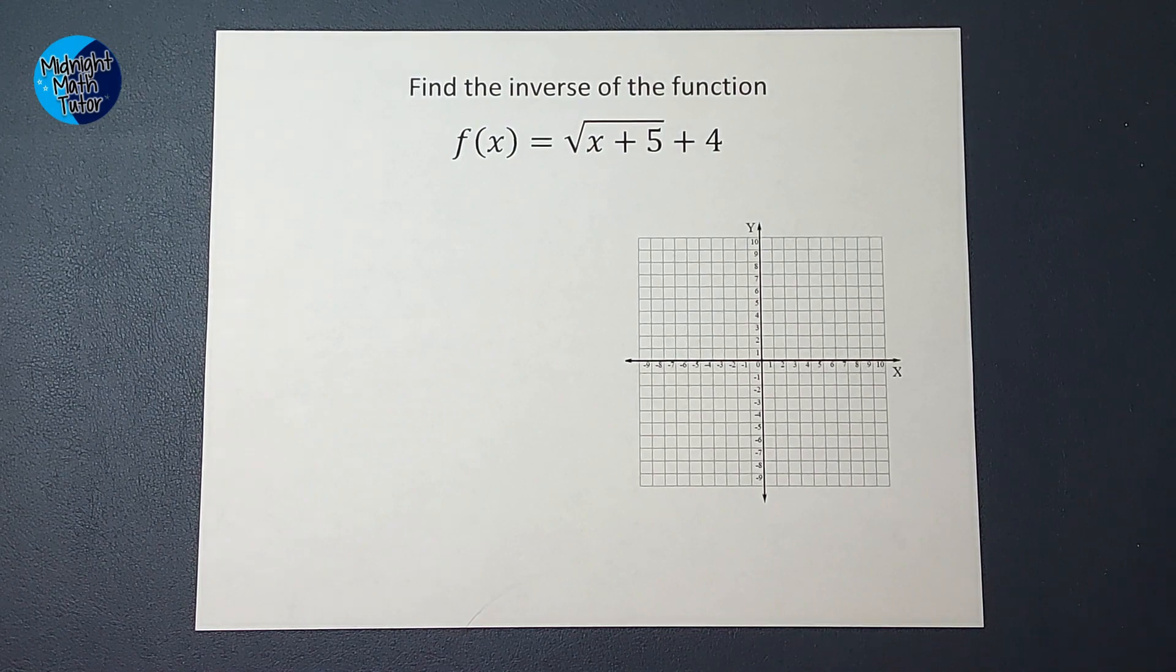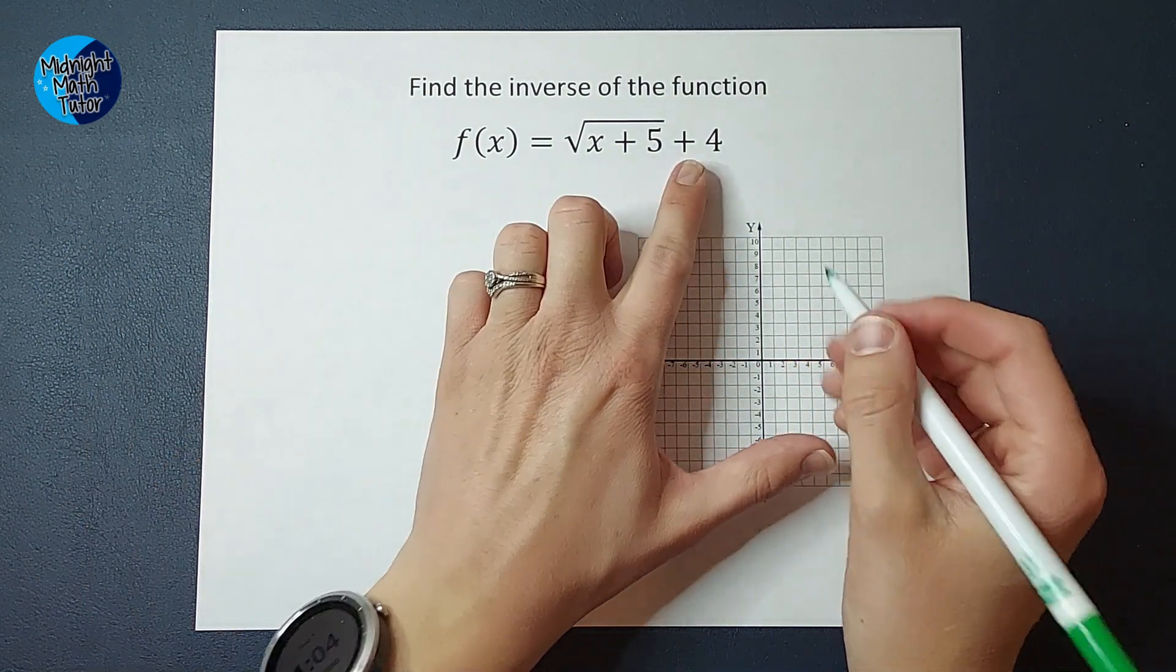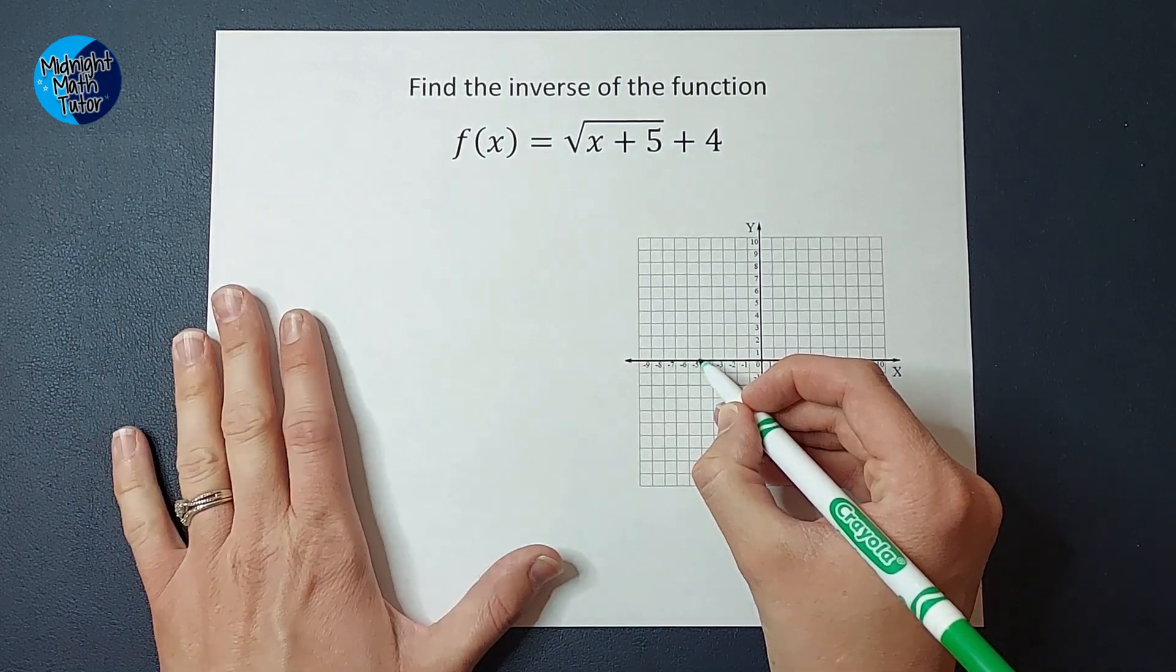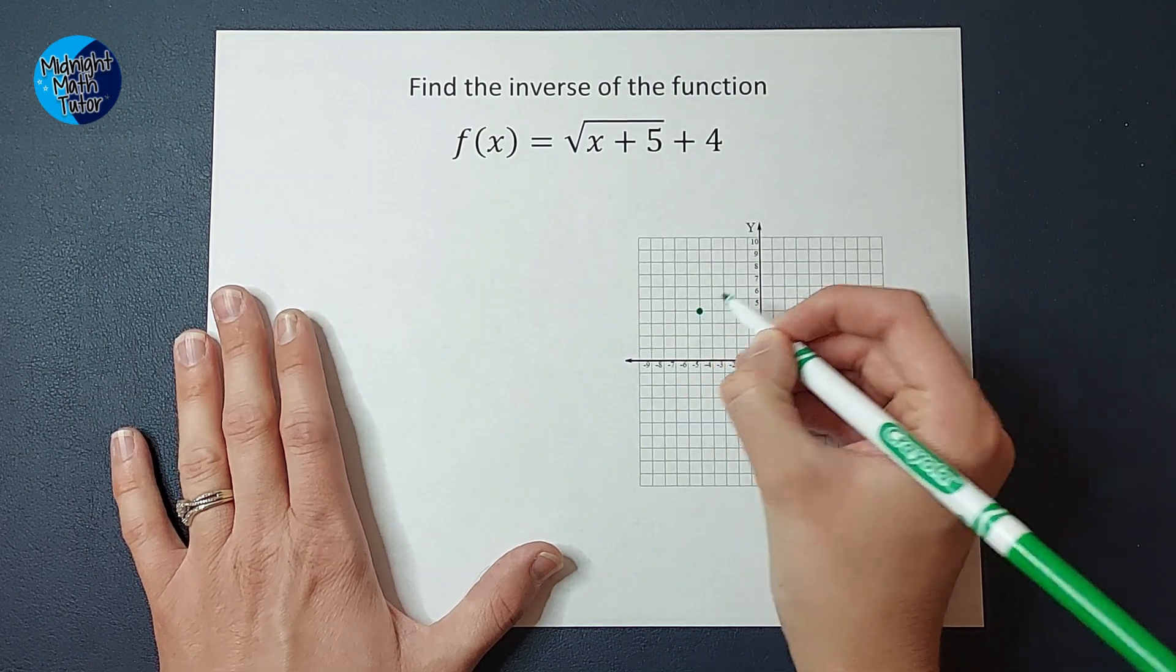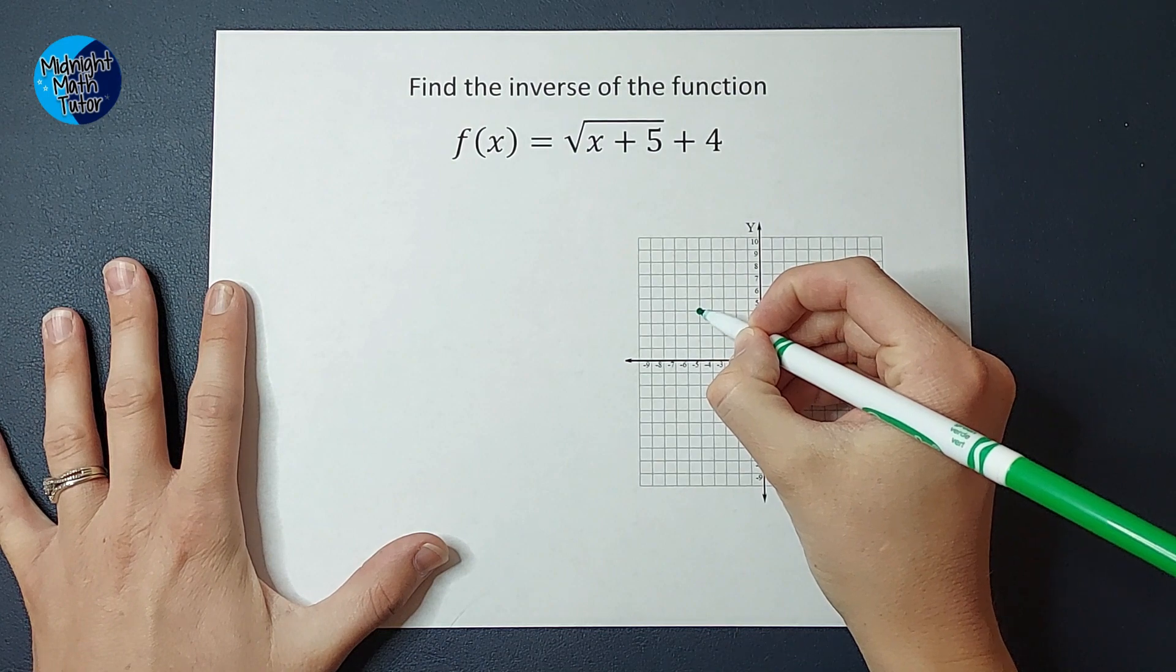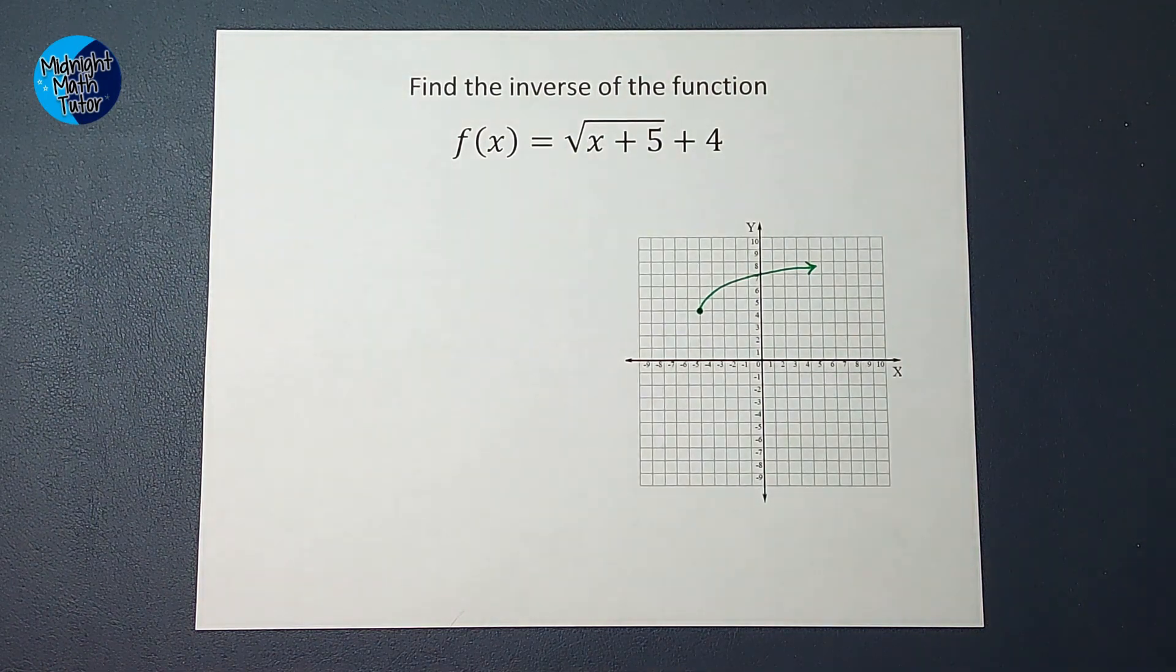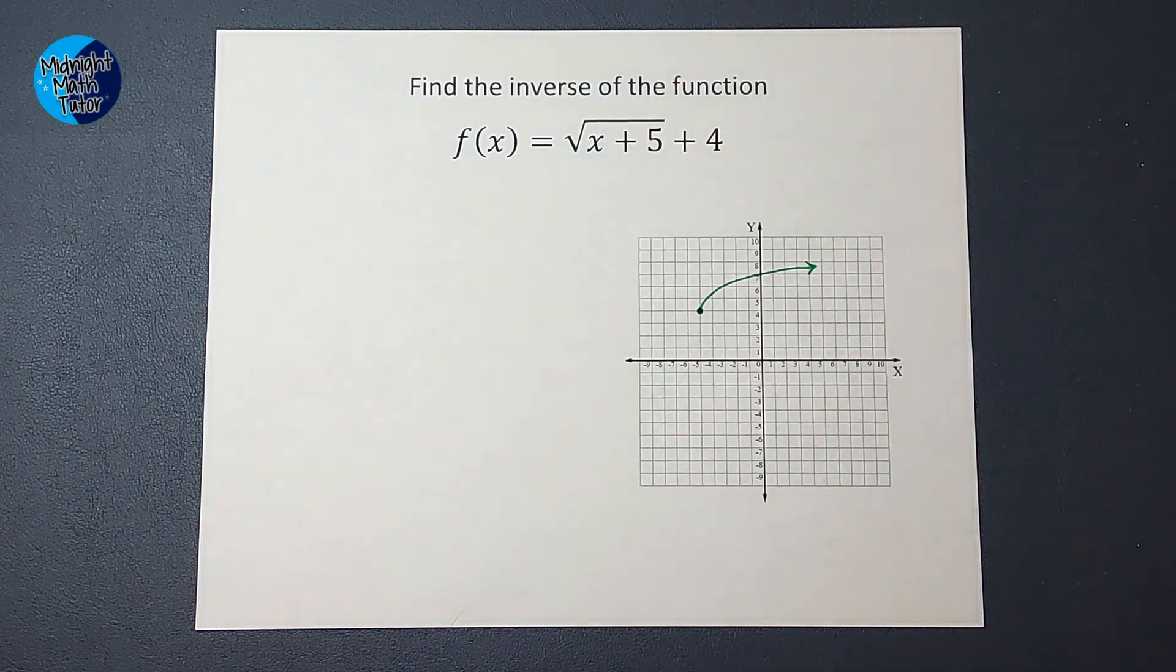If you need a review on how to graph square root graphs, I'll link a video for you. But remember, we have our parent graph. This means I'm going to shift to the left 5, 1, 2, 3, 4, 5, and up 4, 1, 2, 3, 4. And then this isn't going to be perfect, I'm not finding all the points, but I do know my graph will look something like this. And I know that because I've graphed lots of square root graphs in the past. It may not necessarily cross right at 7, I'm just getting an idea of what this looks like.